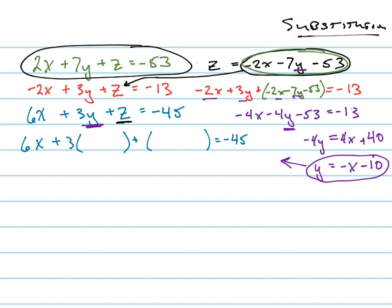So let's first substitute the black one — that'll be z. That's negative two x minus seven, and now instead of y I'm going to put the purple equation back in there. So what was y equal to? Negative x minus ten. So now the beauty of this — I'm now going to have one equation in one variable.